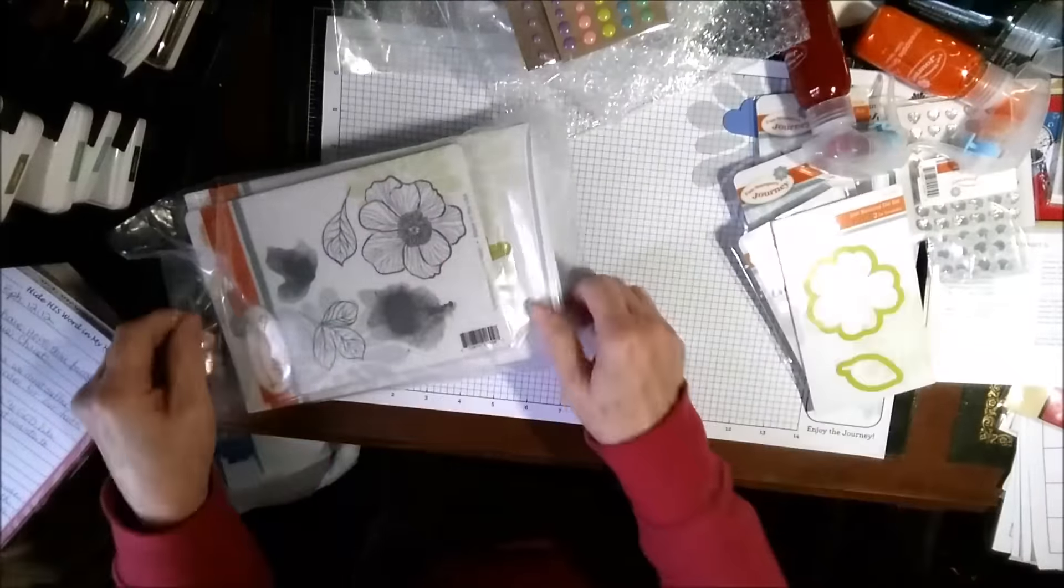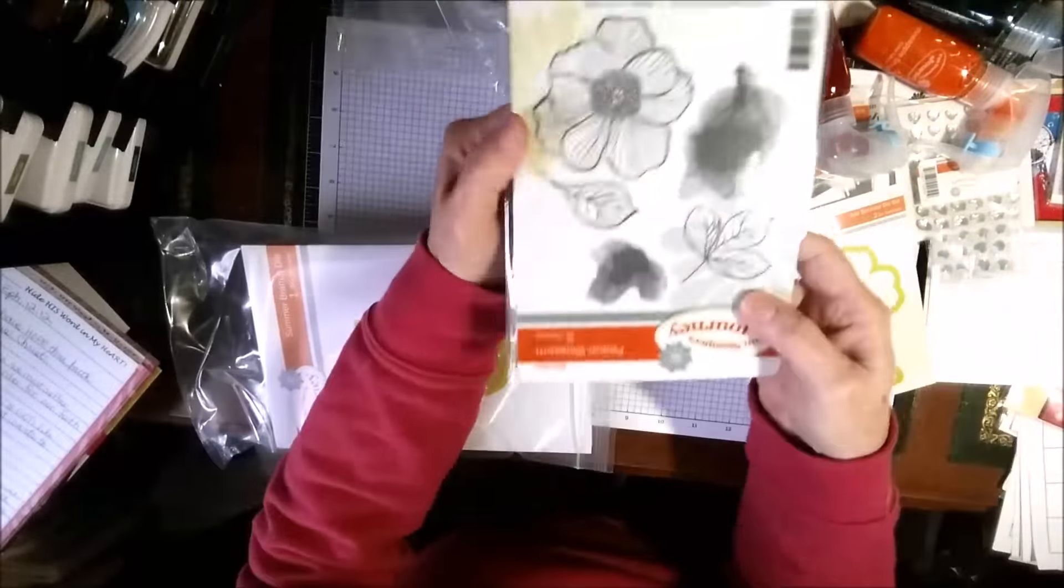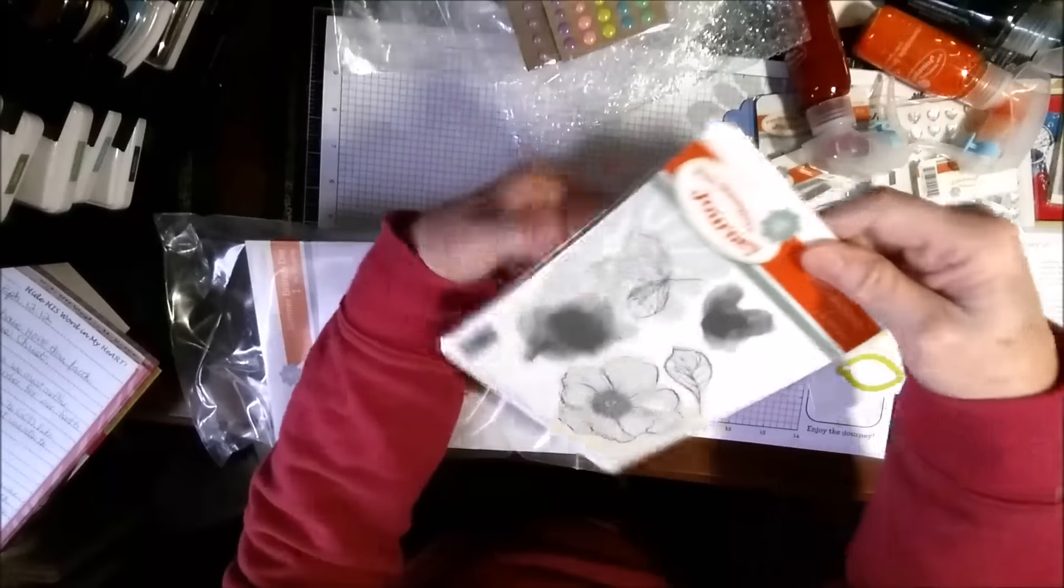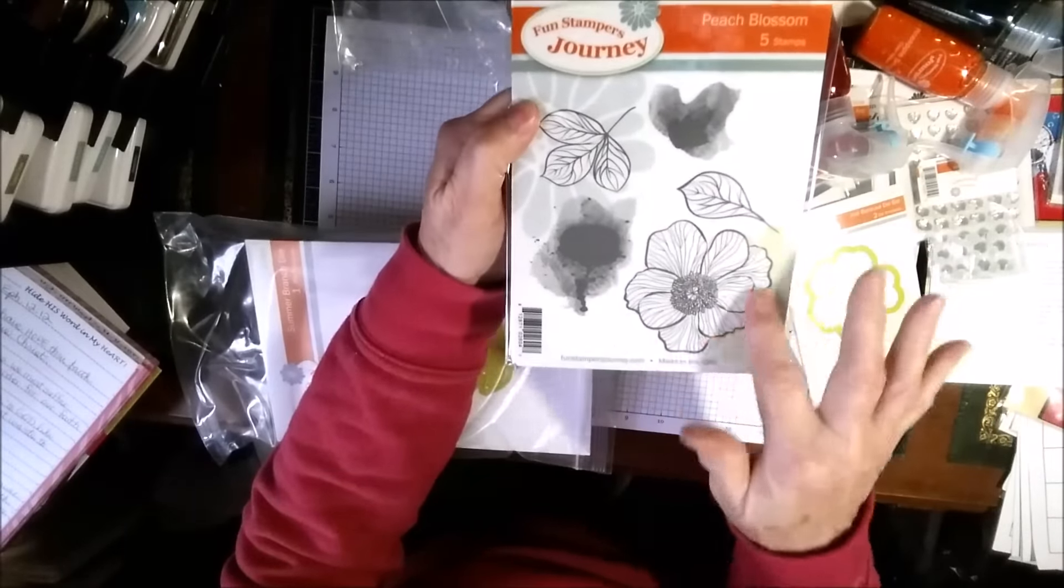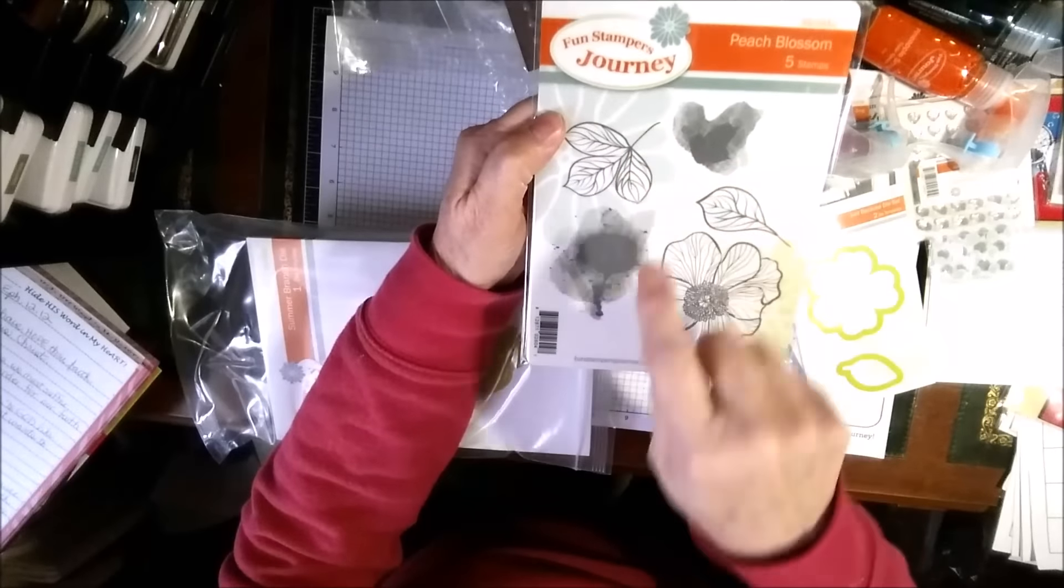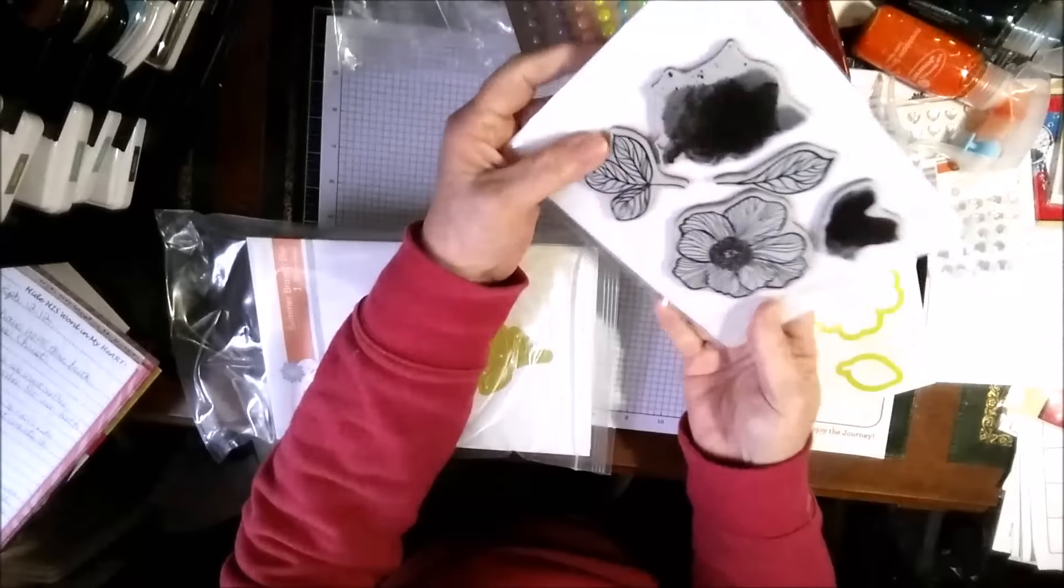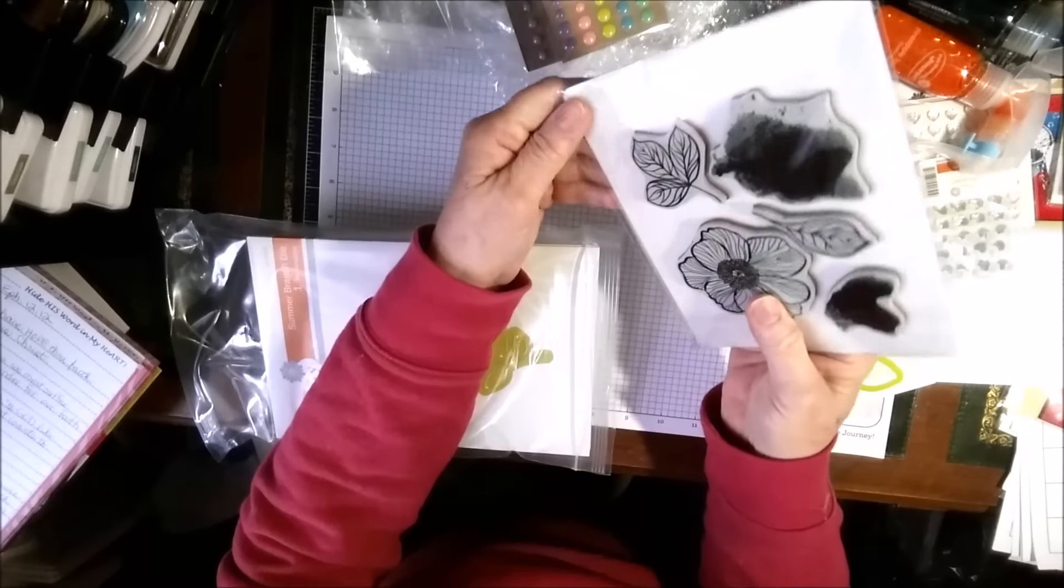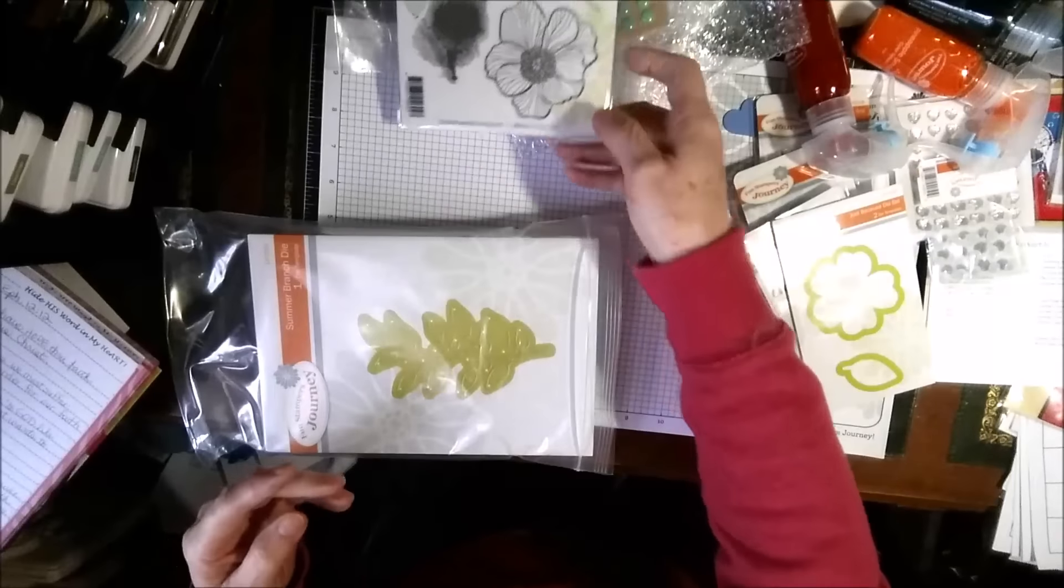And then I've got another flower. Can you tell I'm in the spring mode? This is the peach blossom. But look at that flower. Isn't that pretty? I just think that's very pretty. And I like the leaves. And it's also got these splotchy pieces. So you can really add some depth to your project if you want. But I got that stamp set.